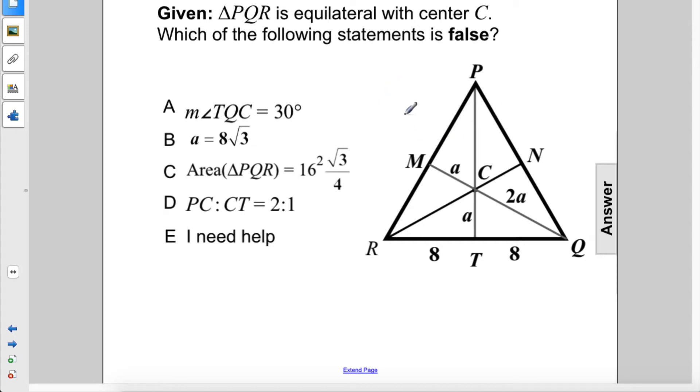Given triangle PQR is equilateral with center C, which of the following statements is false? Alright, so here we have a series of right triangles that are all congruent to each other. So we have 1, 2, 3, 4, 5, 6.